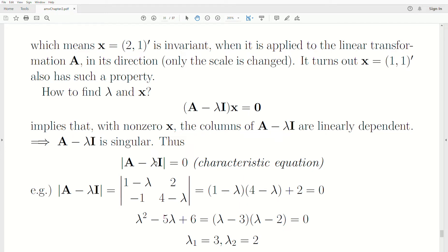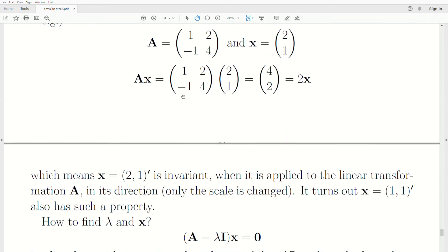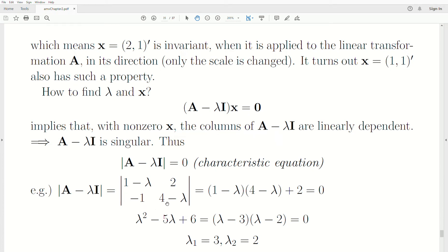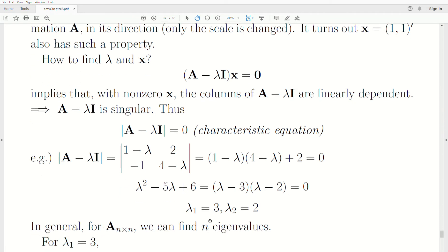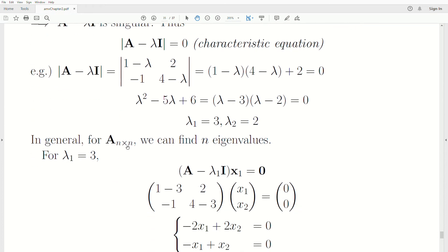We solve this for the lambda values that satisfy this. So we have this equation, and if we use the equation that we used up here, A is (1, 2, -1, 4). The determinant of this generates this equation, which is a quadratic in lambda, which we can solve. There's two values, 3 and 2, that satisfy this. So these are the eigenvalues for the matrix A.